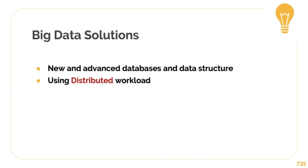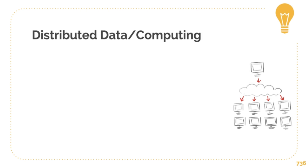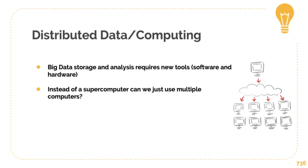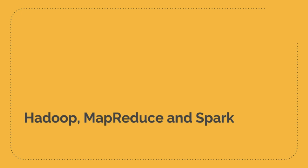So let's look at the solutions. Big data necessitates some new and advanced databases and data structures. We also need something called a distributed workload. If you look at the graphic on the right, you have a computer and then tons of computers below it doing work — that's what big data does. Big data instead of using one computer uses multiple computers, so it's called distributed computing where the process load and storage load is distributed amongst several different computers. And that allows us to introduce MapReduce, one of the first algorithms that did this. In the next section we'll talk about Hadoop, MapReduce, and Spark — the big data libraries you need to know about.